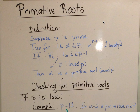The definition of a primitive root says that if p is prime, then for alpha in between 1 and p, alpha to the p minus 1 will be congruent to 1 mod p. If for all i's in between 1 and up until p minus 1, alpha to the i is not congruent to 1 mod p, then alpha is a primitive root.